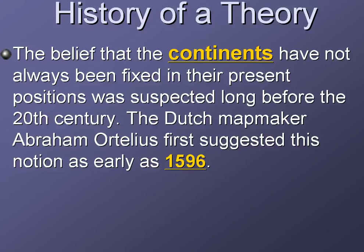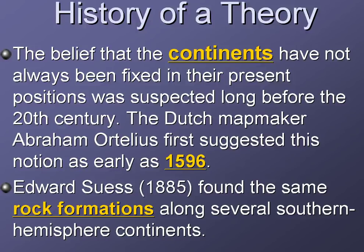This idea that the continents weren't always in a fixed position came up a long time ago, well before the 20th century. In fact, the Dutch mapmaker Abram Ortelius first suggested this notion as early as 1596 — one of the first recorded times someone actually questioned whether the continents were in a fixed position. And Edward Suess in 1885, a geologist, actually found the same rock formations along several southern hemisphere continents. So people were looking at maps and finding geology clues suggesting maybe these continents weren't always where they are now.